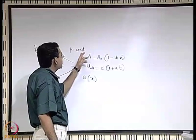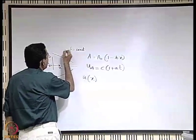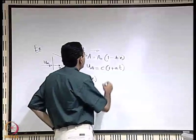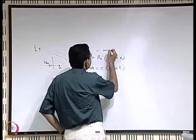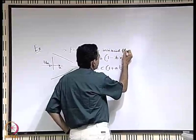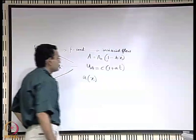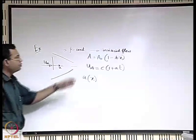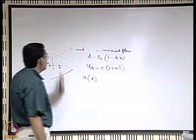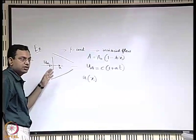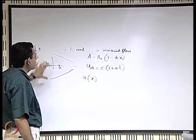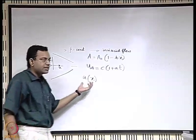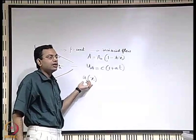One important assumption is density equal to constant. Another assumption, which may not be stated explicitly in the problem but which we will use, is that it is an inviscid flow. Assuming inviscid flow means we are not bothering about the variation of velocity along the transverse direction. We assume that at each section the velocity is uniform. To find the acceleration, we have to go step by step — first find the velocity.